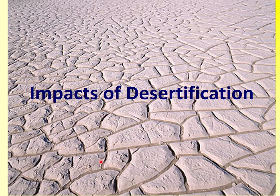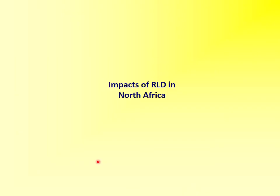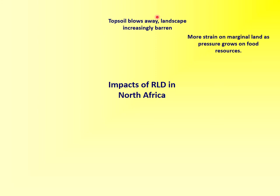The SQA will ask you to give answers on the impacts of desertification. You're being asked to explain how the destruction of land and the creation of deserts impacts lives and the environment in North Africa. The first impact is that topsoil blows away, creating dust storms and sandstorms. The second impact is increasing strain on marginal land — as deserts grow in size, there is less farmable land and more pressure on food resources. As the desert grows, this places more pressure on the remaining marginal land.